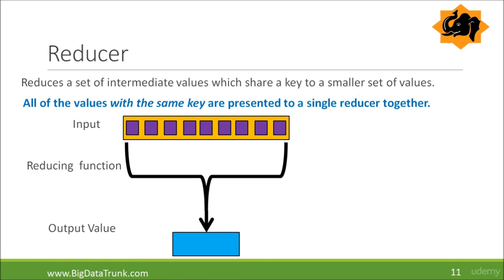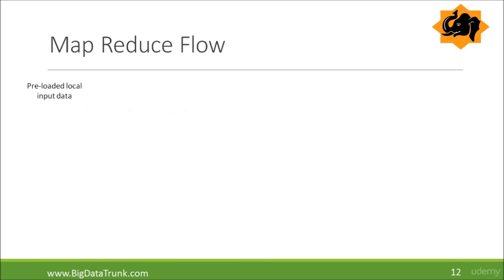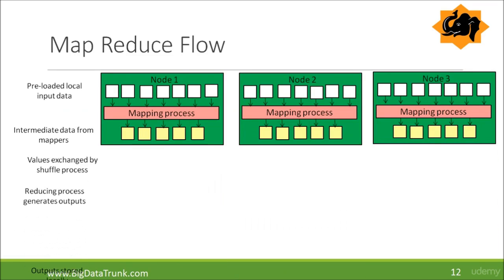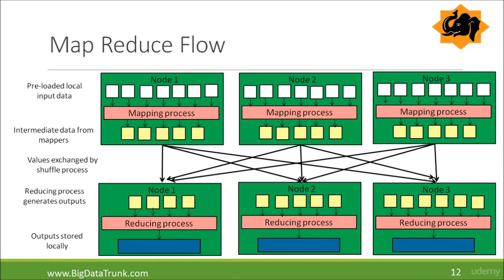Let us see the whole flow in one diagram. We have pre-loaded local input data. Then the mapper generates the intermediate data — the index cards. Then values are exchanged by the shuffle process. The reducing process then generates the output, which is stored locally. This is how the whole MapReduce flow works. Hope you have understood mapper and reducer well. If you have any queries, you can post them in our question and answer section. Thank you.